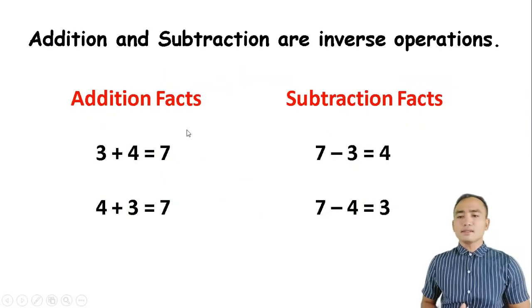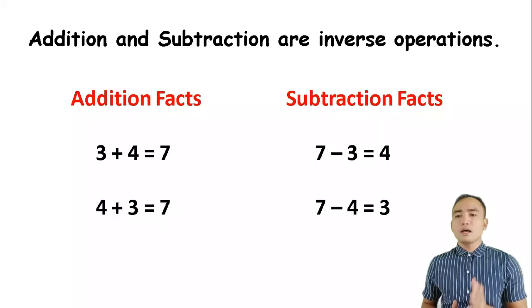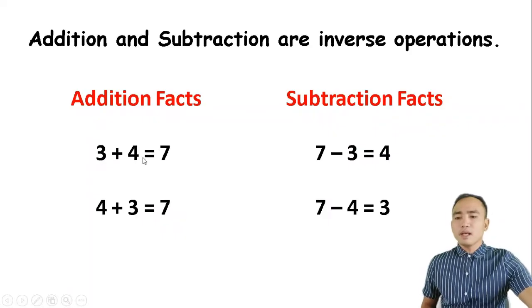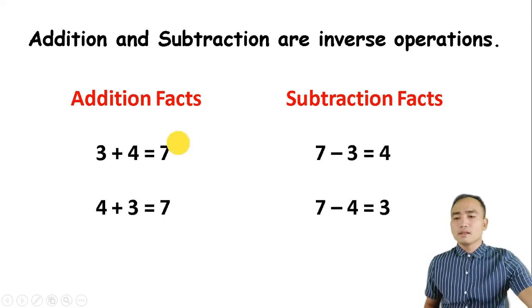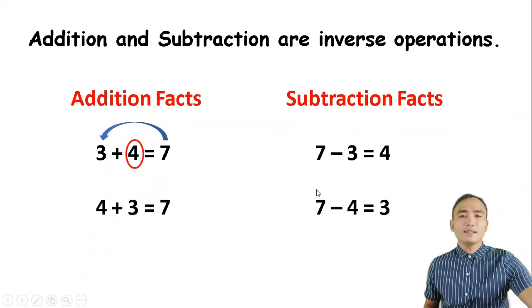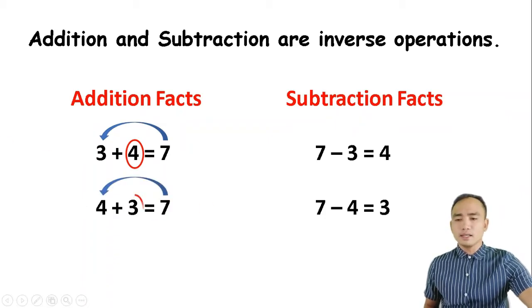Here are the facts that will prove that addition and subtraction are inverse operations. For example, 3 plus 4 is 7. If we are going to take the inverse of that, 7 minus 3 is 4. Another example: 4 plus 3 is 7, and the inverse of that is 7 minus 4 is 3.